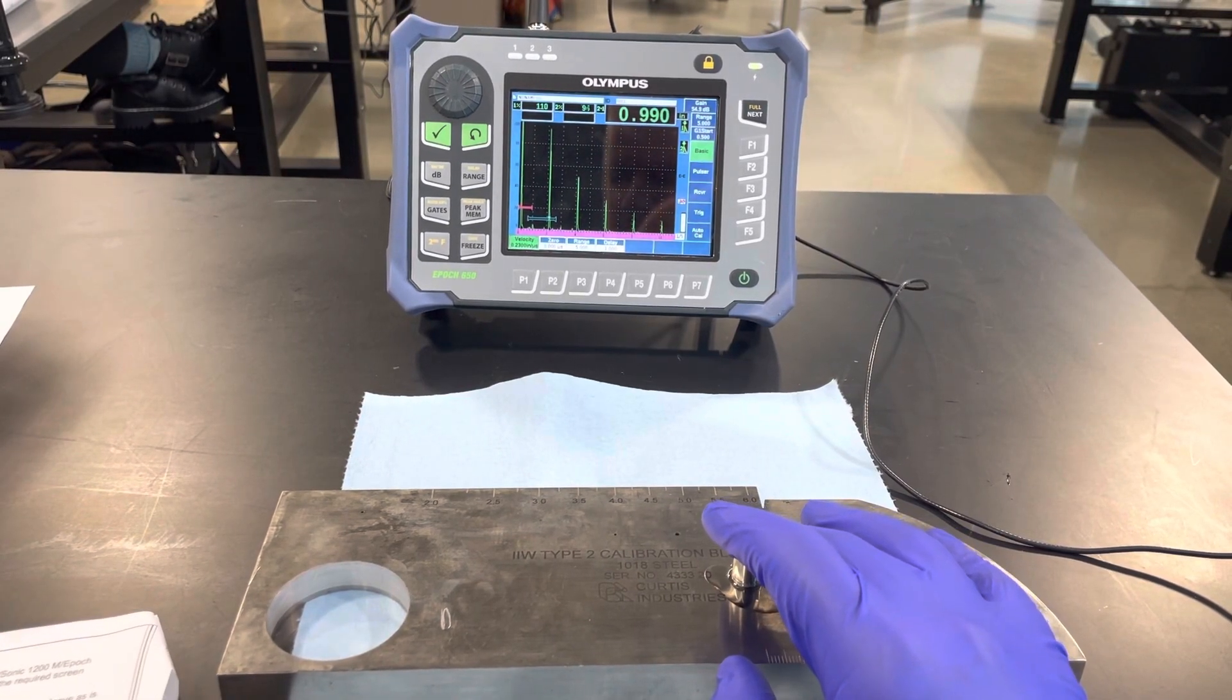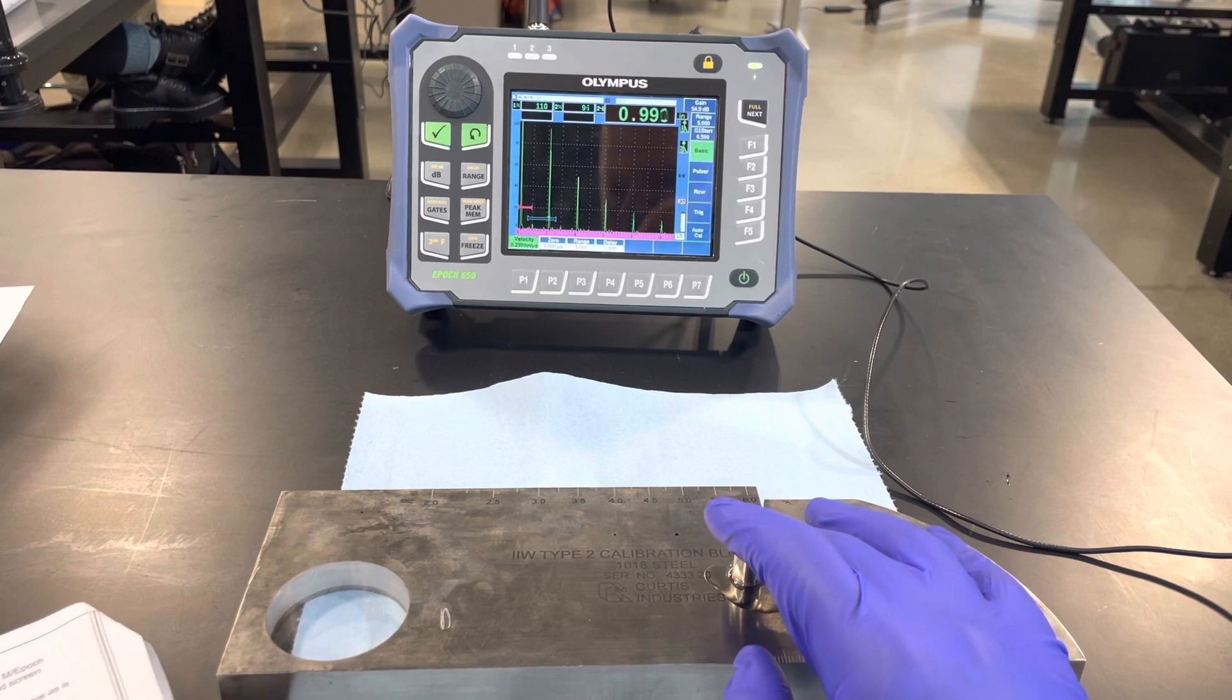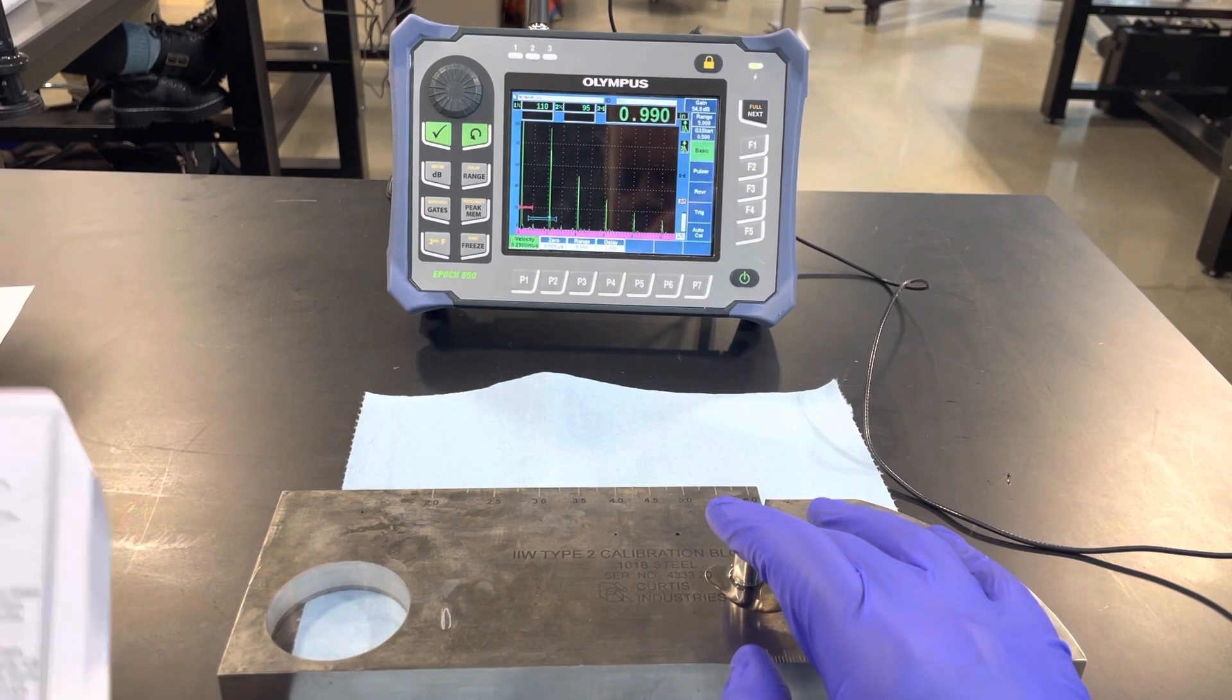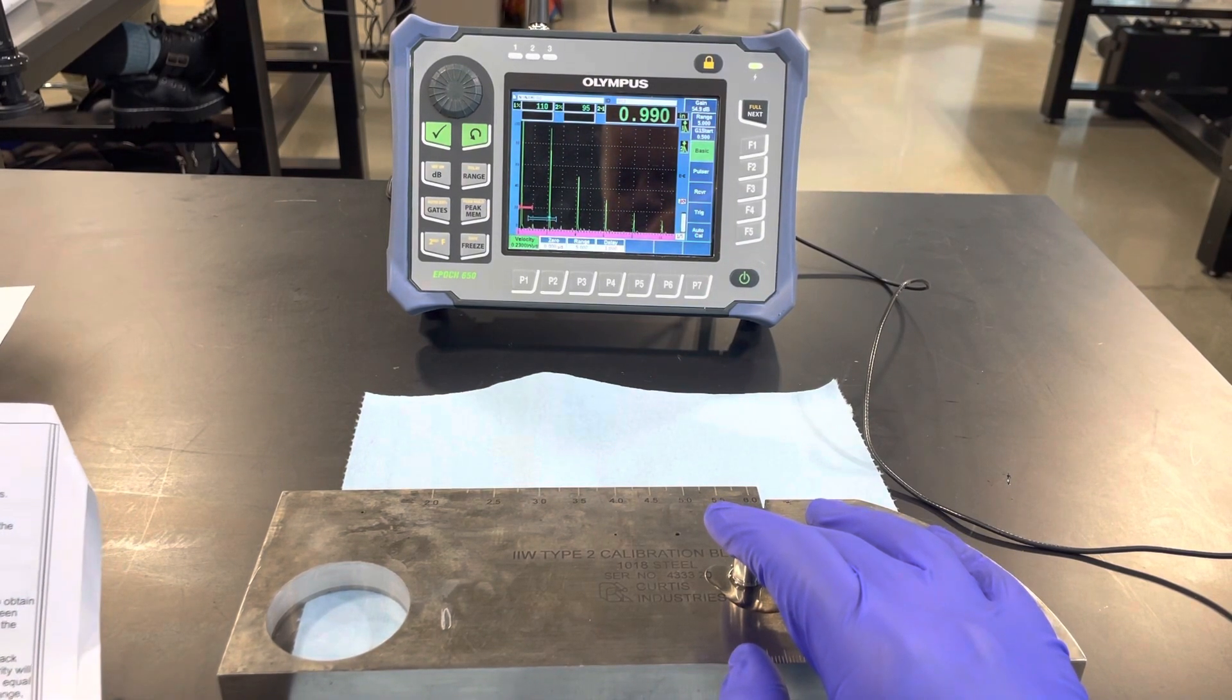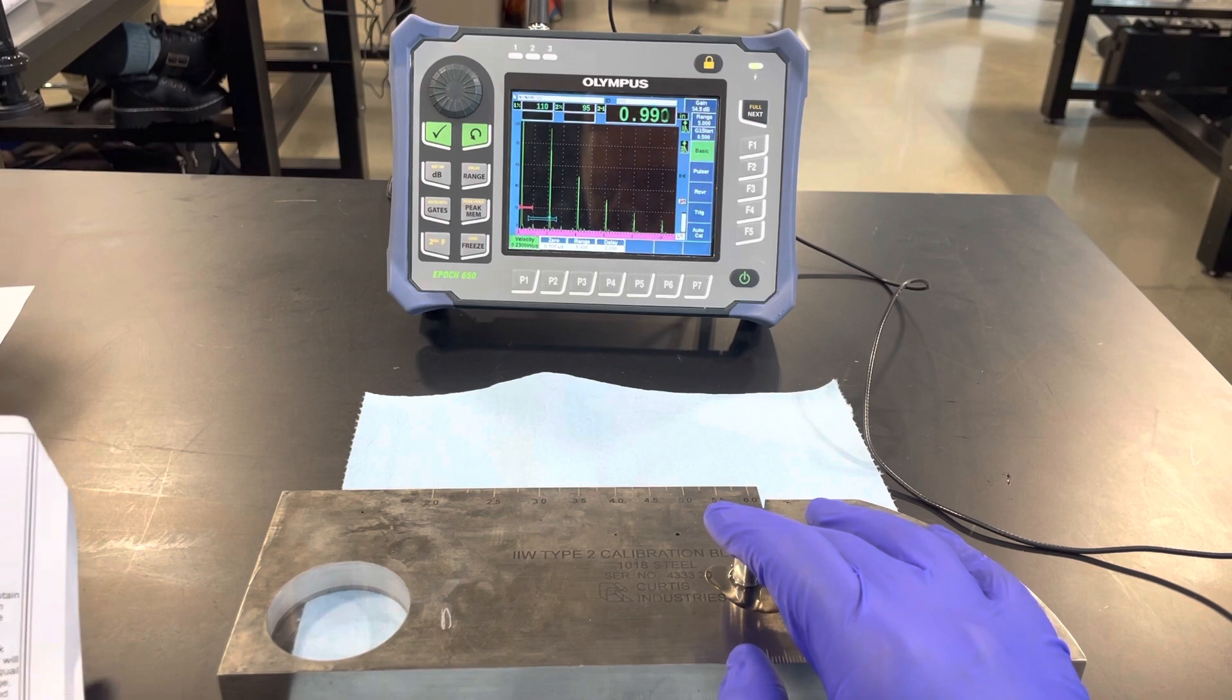Alright, here we are doing a horizontal linearity check with a 5 MHz transducer and a steel type 2 IIW block.